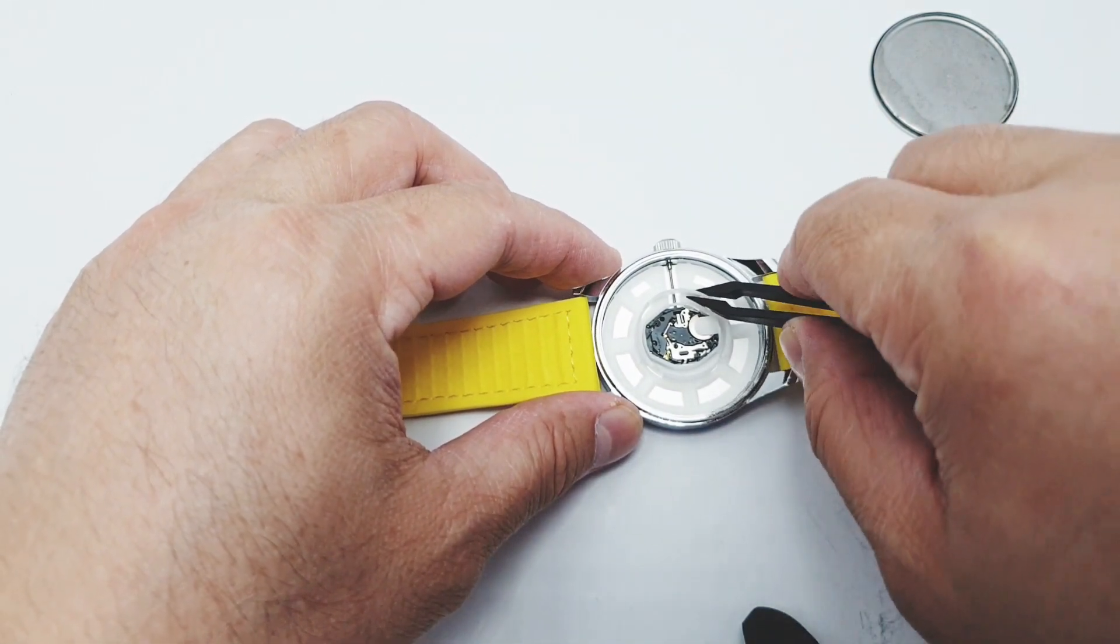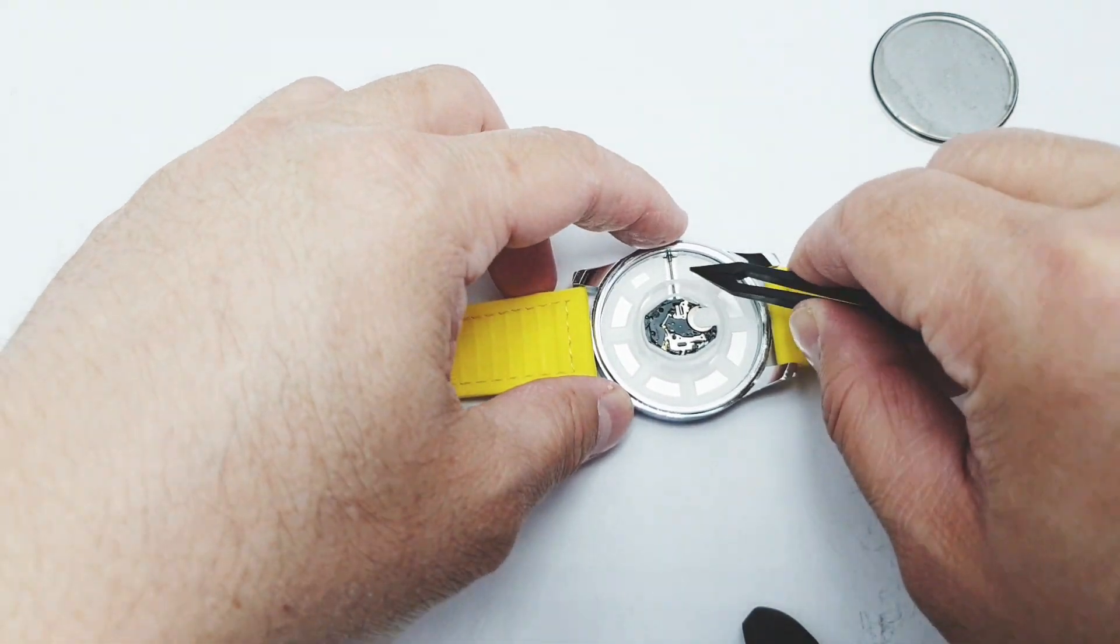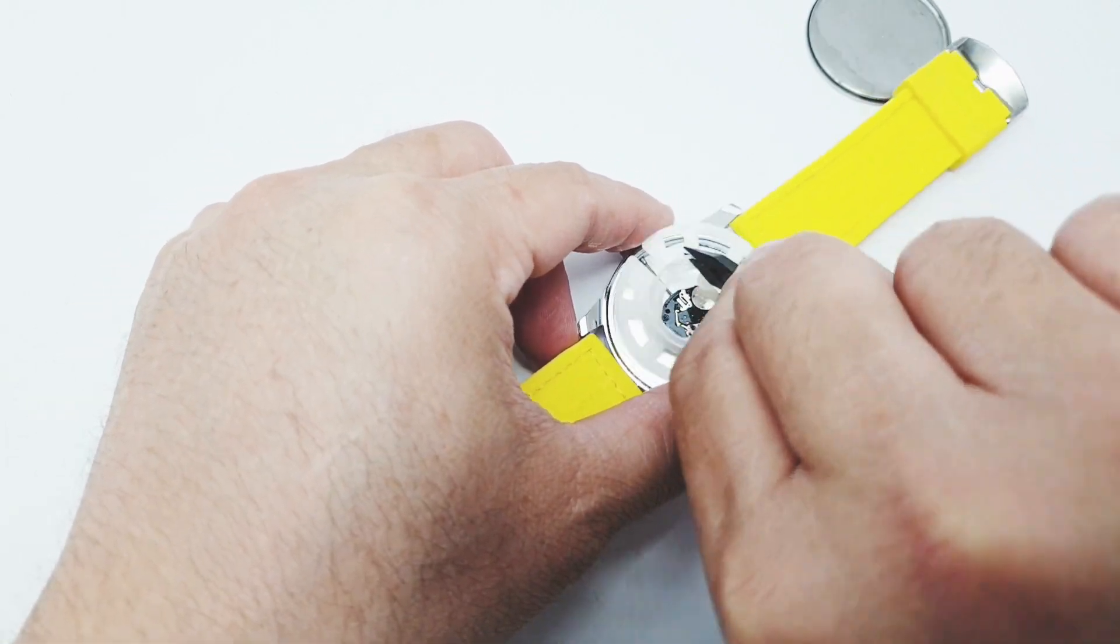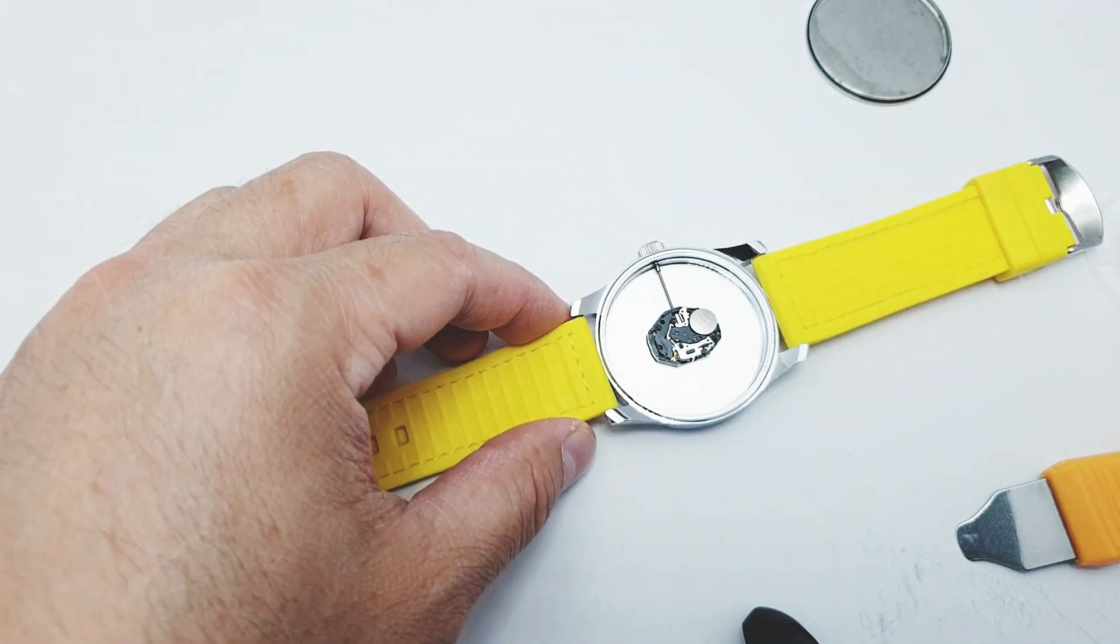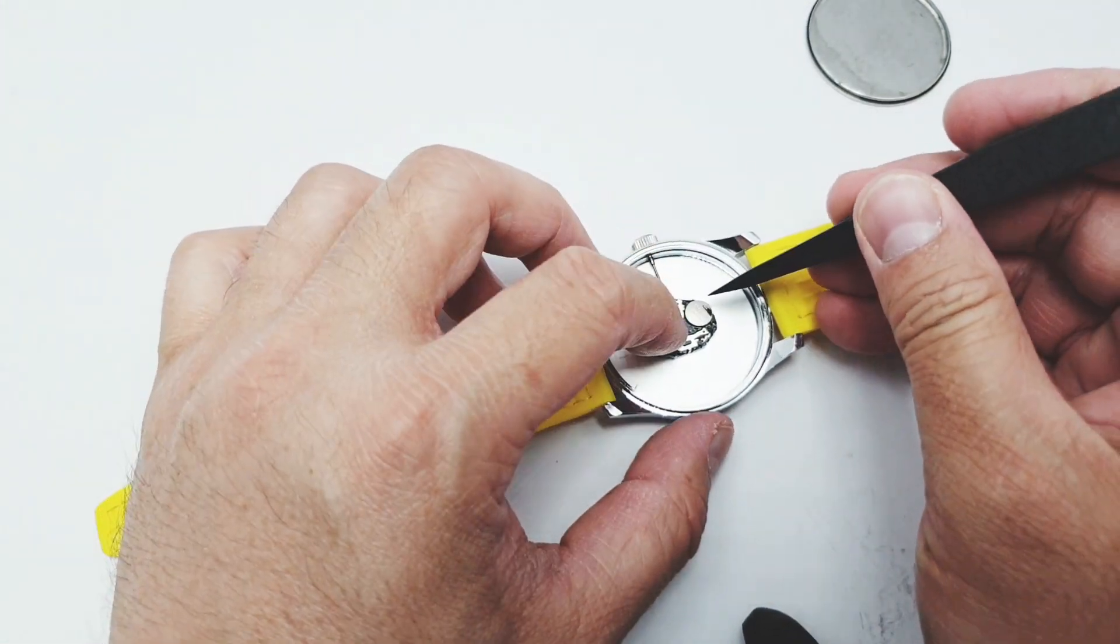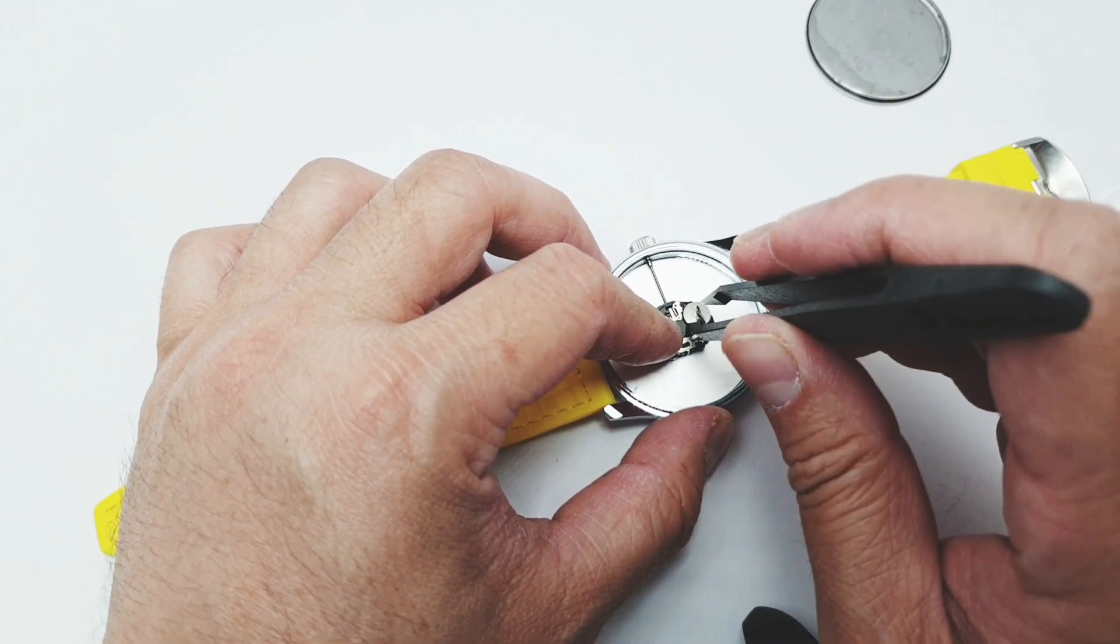So I'm gonna use this plastic tweezer to twist my way and remove this plastic that is hindering the watch. Okay so let's attempt and remove this battery.